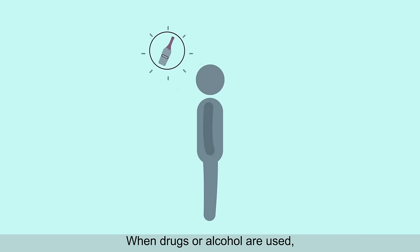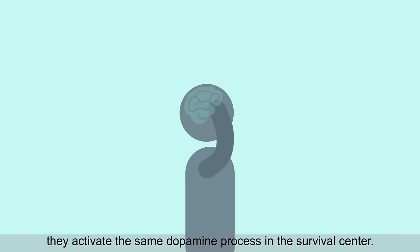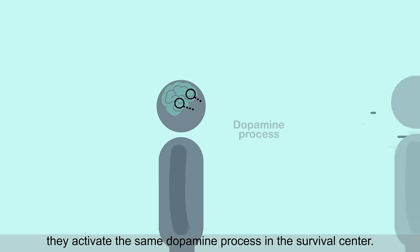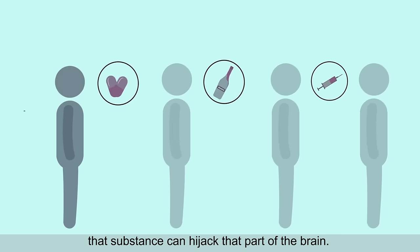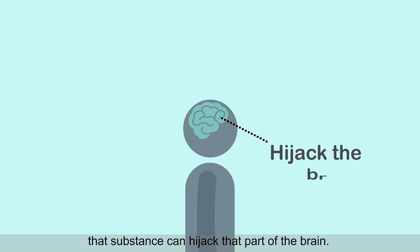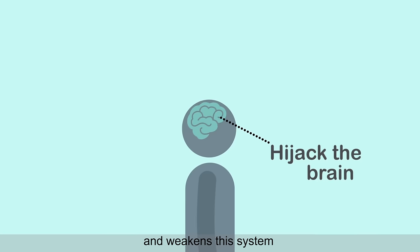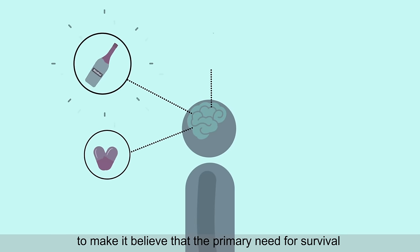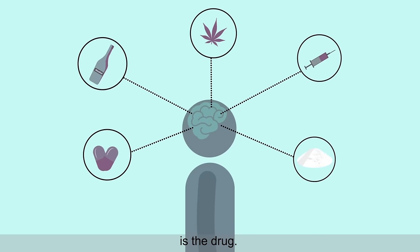When drugs or alcohol are used, they activate the very same dopamine process in the survival center. And when use is repeated, that substance can hijack that part of the brain. This hijacker changes the brain and weakens the system to make it believe that the primary need for survival is the drug.